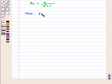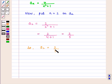Now, putting n is equal to 2 in a_n, we get a_2 is equal to 2 upon 2 squared plus 1 which is equal to 2 upon 4 plus 1. So, a_2 is equal to 2 by 5.